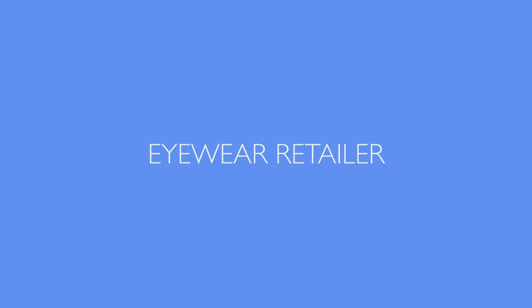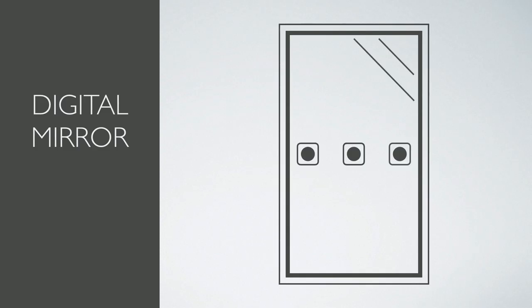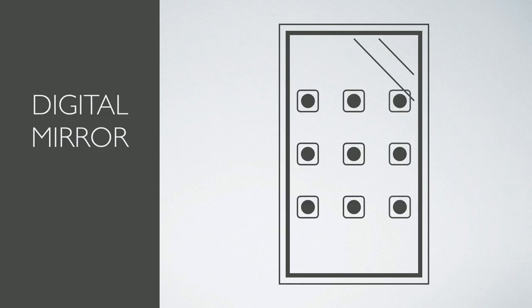For our first example, I'd like to talk about a physical installation that we did for an eyewear retailer. There's an inherent problem when searching for prescription lenses — the in-store samples have plain lenses, and since your vision is blurry without your corrective lenses, you can't clearly see what you look like while wearing the frames. Our solution: a digital mirror. This fixture consists of a display behind mirrored glass, with cameras to capture front and side images of the customer. Since people vary in height, we added two additional rows of cameras to take photos as close as possible to eye level.